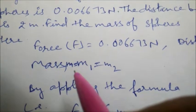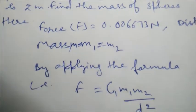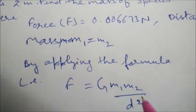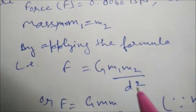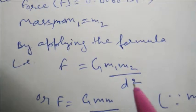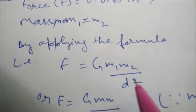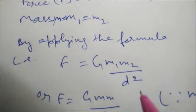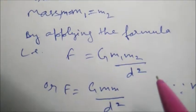We will solve it by applying the formula F equals G M1 M2 upon D square. That is, force equals gravitational constant times the product of their masses upon the square of the distance between the two objects.